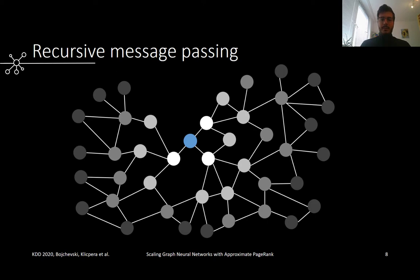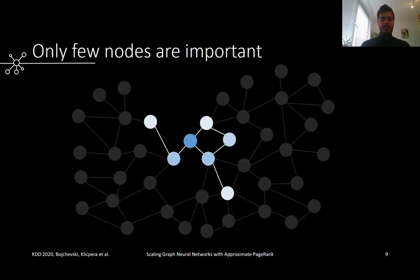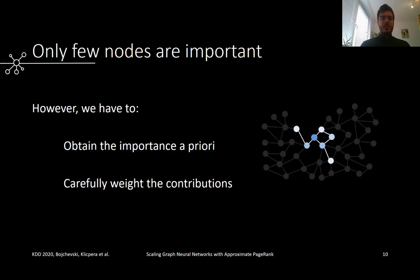So how do we circumvent this neighborhood explosion? Previous works propose different sampling schemes to reduce the size of the neighborhood during training. As we will see later in the experiments, this is not the best strategy. Instead, we notice that only very few neighbors are actually important for the final prediction. The main question is how to efficiently find them. It is crucial to find these important nodes a priori, since calculating them during training is far too expensive.